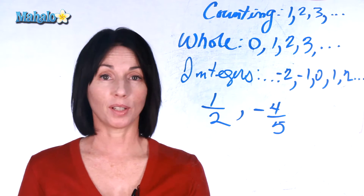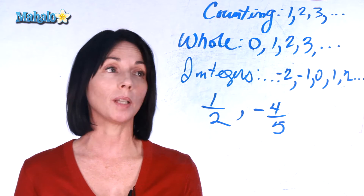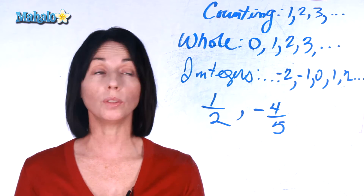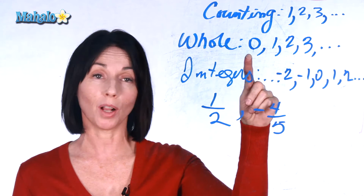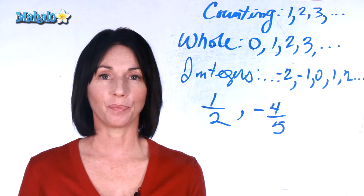If we add zero to that set of numbers, we get the whole numbers. So the whole numbers are zero, one, two, three, four, etc.